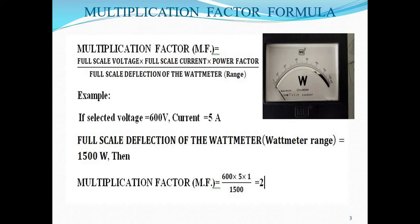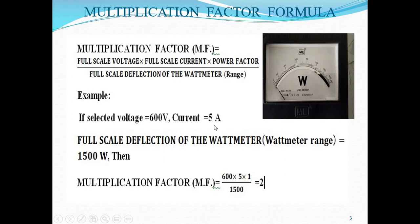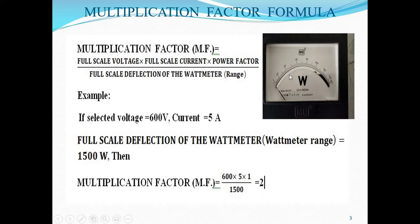For example, suppose we select this watt meter for the 600 volt voltage range, current range is 5 ampere, and the full scale deflection is 0 to 1500 watts. Then the multiplication factor equals 600 into 5 into 1, divided by 1500, which gives 2. So, whenever we observe a reading on the watt meter and the multiplication factor is 2, the actual reading is the observed reading multiplied by 2. If we observe 400 watts, then the actual reading is 400 into 2, that is 800 watts.